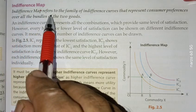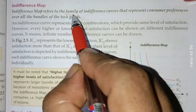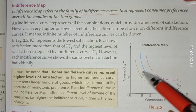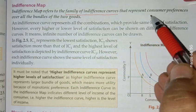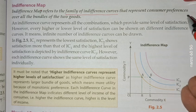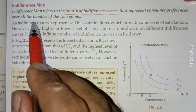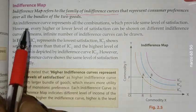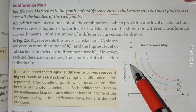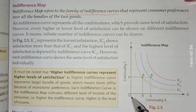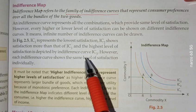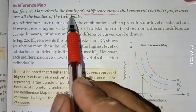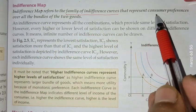An indifference map is a family of indifference curves. It covers all the bundles of the two goods. Indifference map refers to the family of indifference curves that represent consumer preferences.